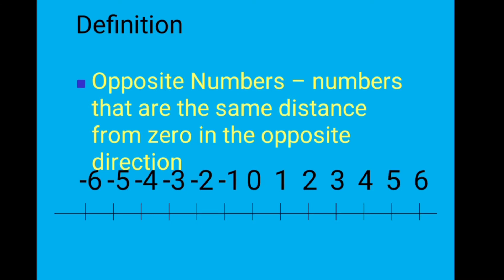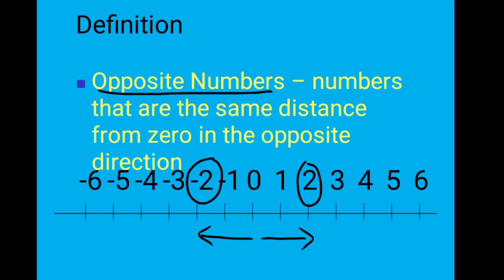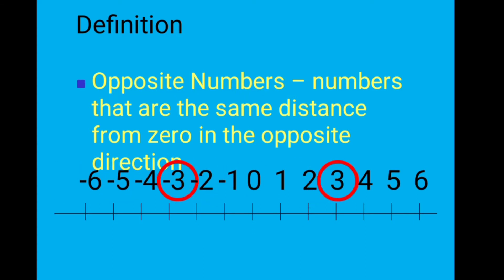Opposite numbers. Look here: minus 2 and plus 2 — zero is in between. Minus 2 and plus 2 are at equal distance from zero — equidistant. So these numbers are opposite numbers. Minus 2 and plus 2, minus 3 and plus 3, minus 4 and plus 4, minus 5 and plus 5, minus 100 and plus 100 — these are opposite numbers. So minus 3 and plus 3 are opposite numbers.